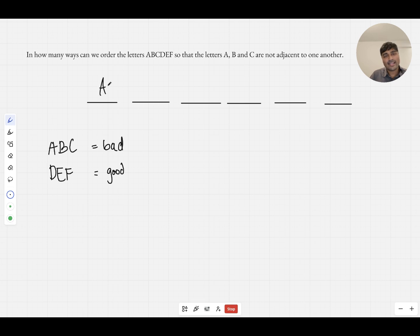For example, if I had A here, B here and C here, I could of course permute those three letters A, B and C, but I'll worry about that later.